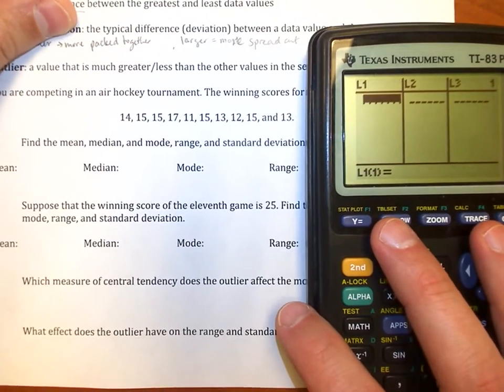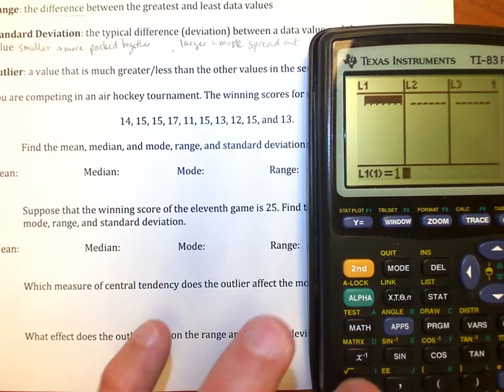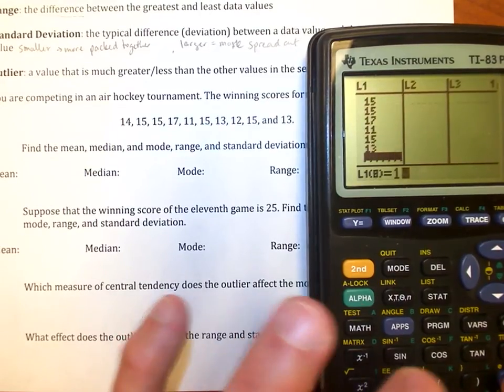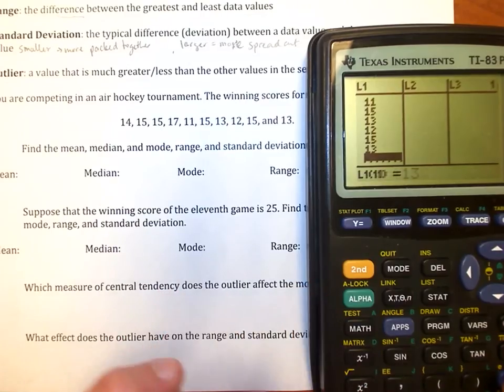So now let's go through and let's enter in the new values here. So I have 14, 15, 15, 17, 11, 15, 13, 12, 15, and 13.